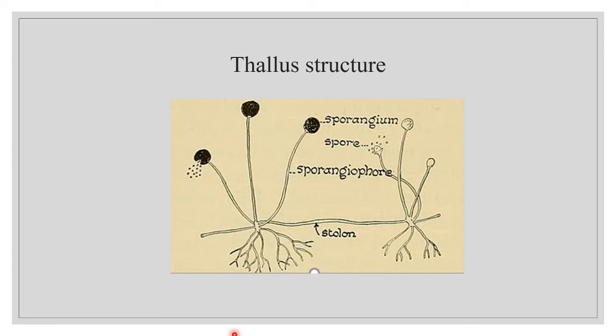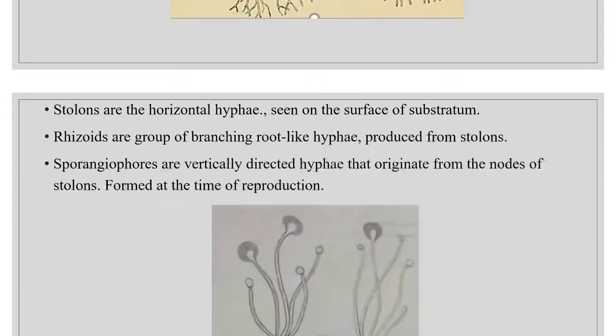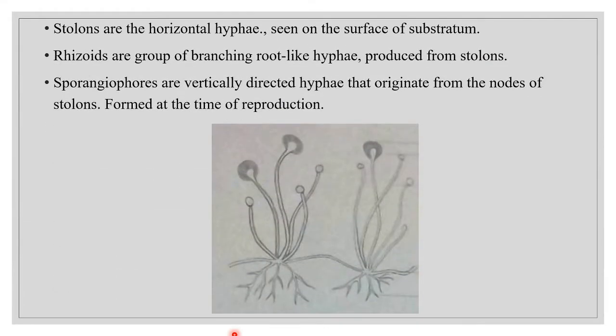In the somatic phase the plant appears as a cottony white outgrowth. When it undergoes reproduction, numerous black sporangia appear on the tips of structures called sporangiophores, giving a black appearance. Hence the fungus is otherwise called black mold. From the mycelial body that grows internal to the substrate, three types of hyphae take their origin: stolons, rhizoids, and sporangiophores.